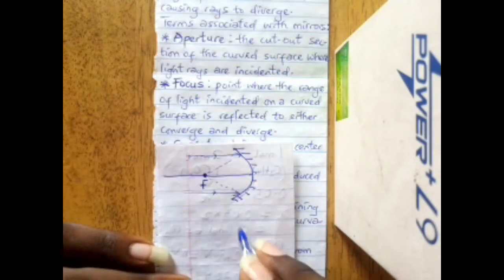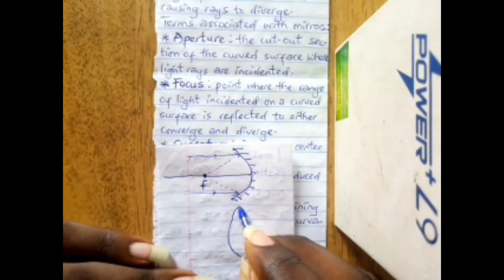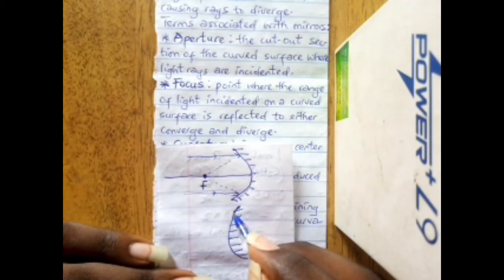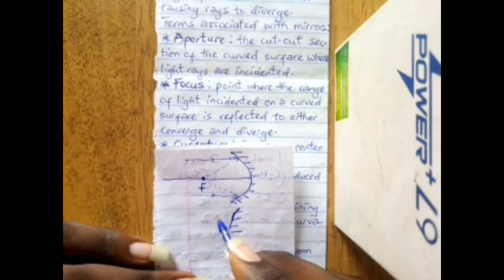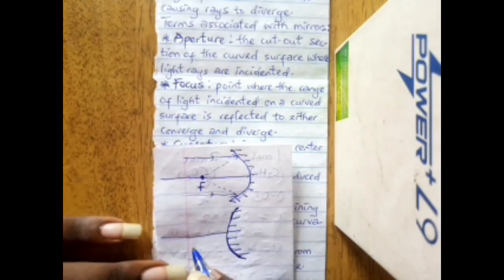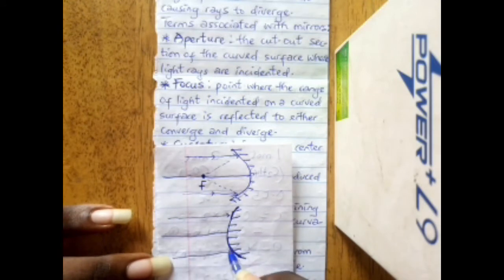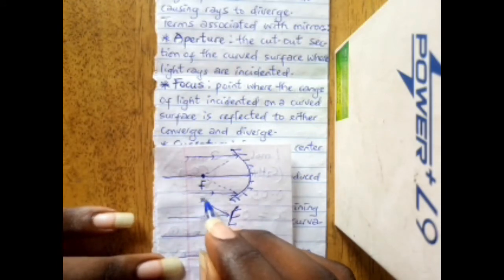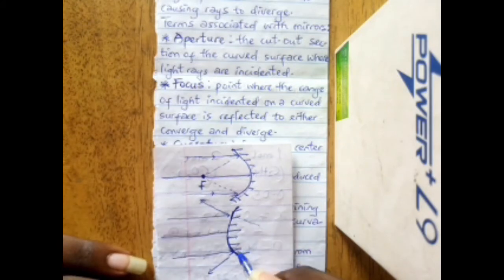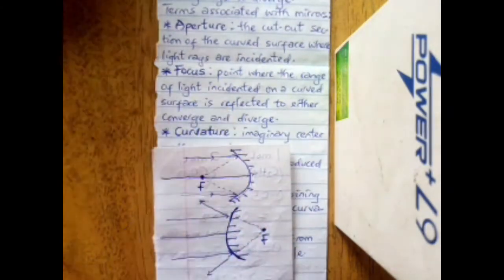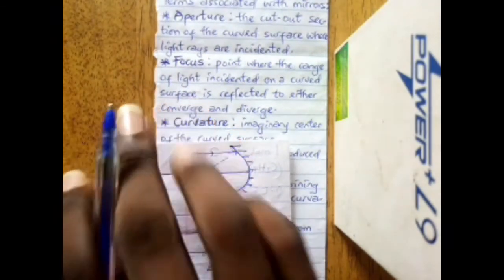For a convex mirror, the reflecting surface bends outward. Light rays incident on it tend to spread outward and diverge, and this diverging point is the focus of the convex mirror. We've discussed the aperture and now the focus.